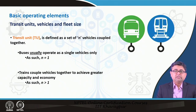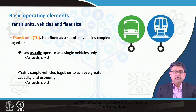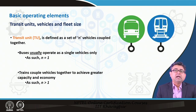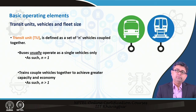The next thing to know is about vehicles, transit units, and fleet size. A transit unit (TU) is defined as a set of N vehicles coupled together. Buses usually operate as single vehicles, so N equals 1, whereas trains are coupled together to achieve greater capacity and economy, and in that case N is greater than 1. There are also newer articulated buses that may have 2 coaches combined, in which case N would equal 2.